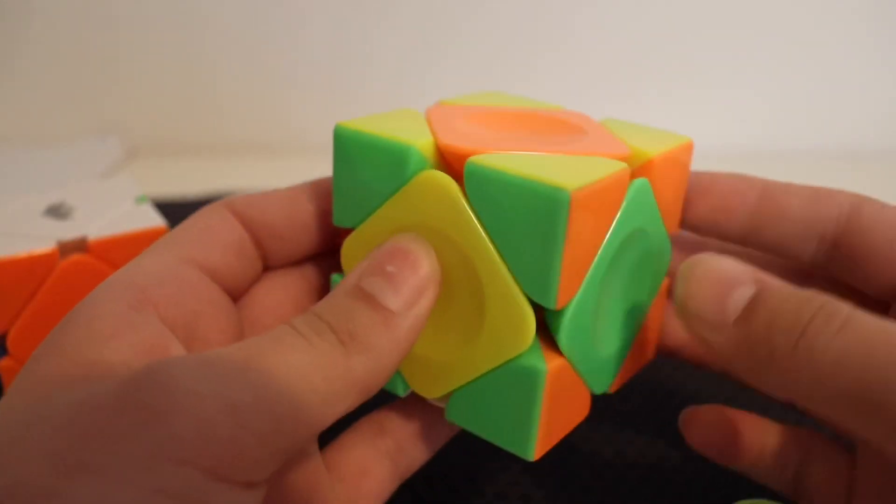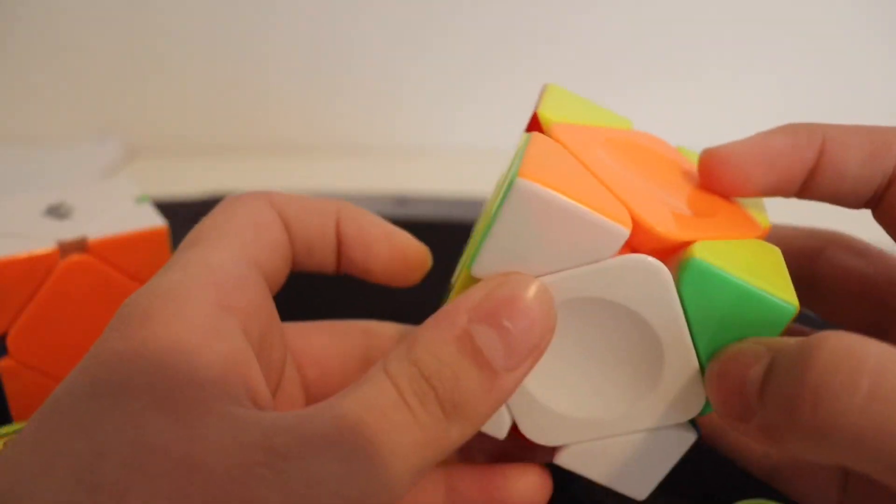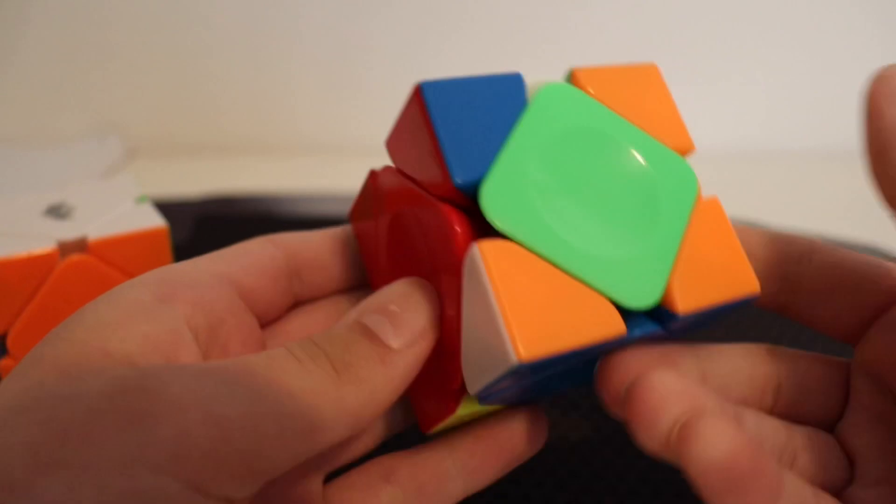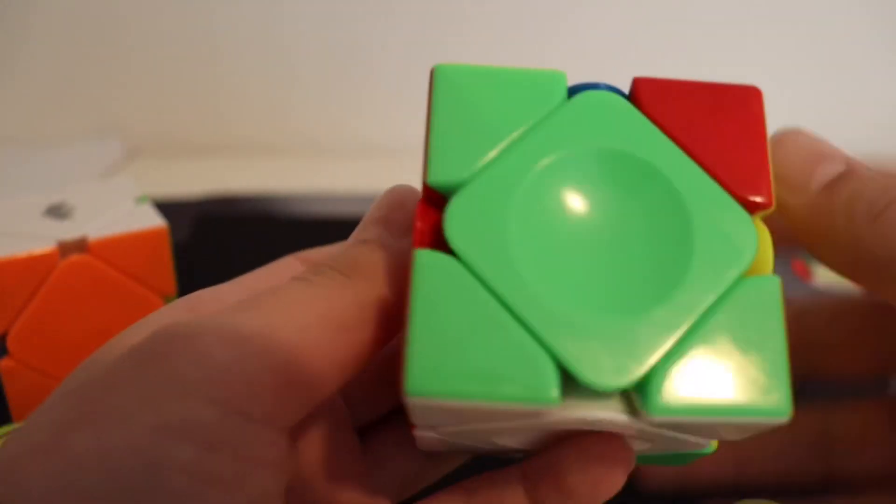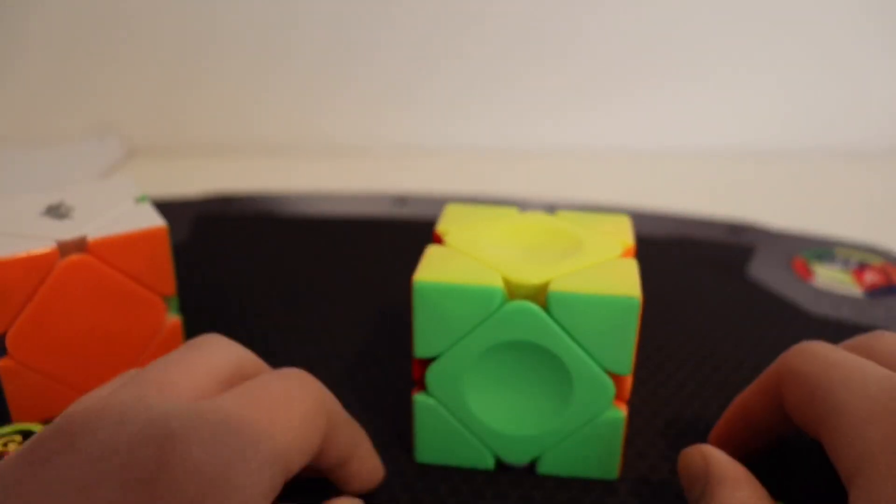For this one, it's the same exact thing. You're just moving it the opposite direction over here, then doing the U-perm, and then fitting it back.